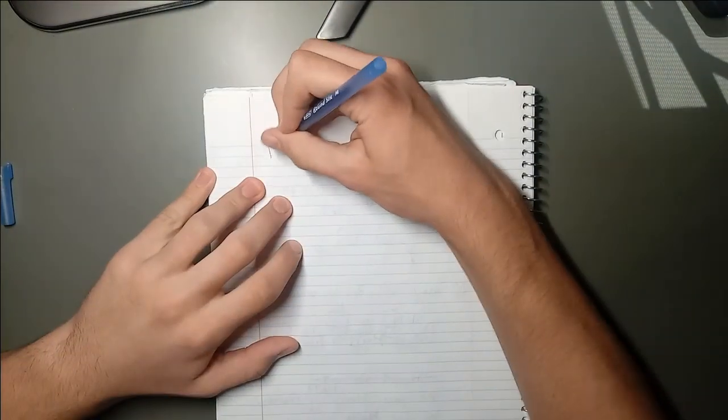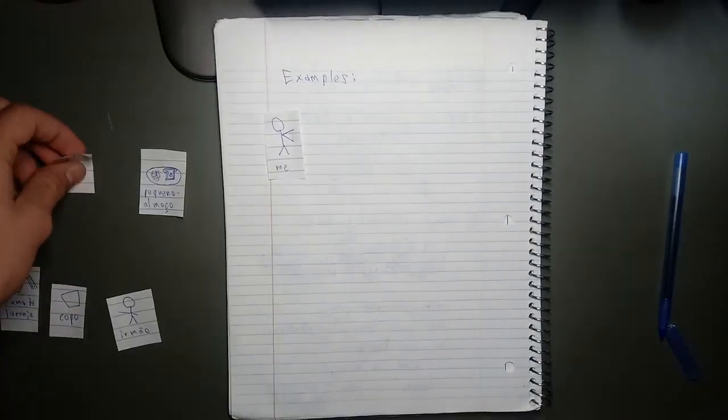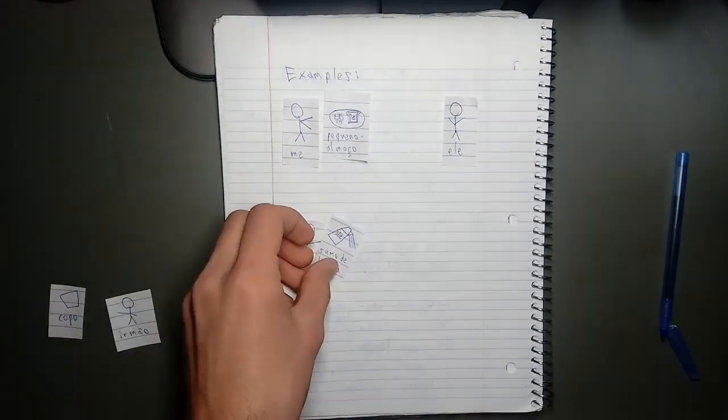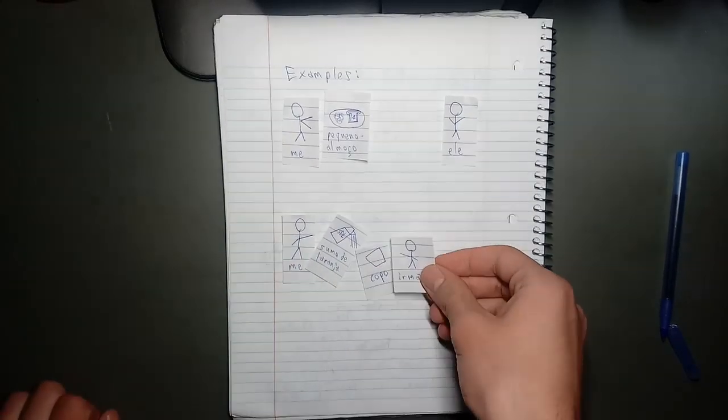Here are some examples of sentences with indirect objects in English. We'll get to Portuguese very soon. I made him a breakfast of scrambled eggs and toast. He poured his brother some orange juice. Please excuse the food theme. I'm kind of hungry right now.